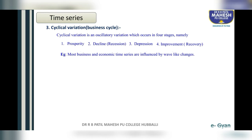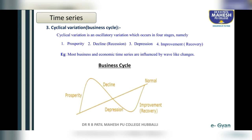For example, most business and economic time series are influenced by wave-like changes. This can be represented diagrammatically. Here is the diagrammatic representation of the business cycle — observe this diagram.